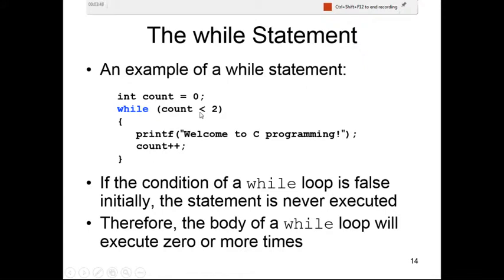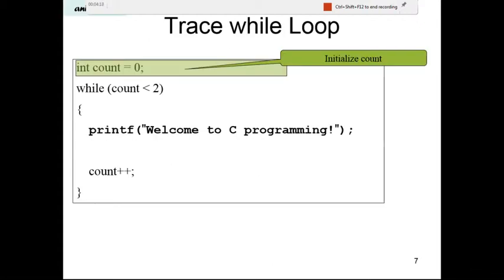In this example, count is less than 2 — that is the condition. If true, we execute the statement inside the curly brackets: printf("Welcome to C programming"), which is printed to the screen. Then we update count by incrementing it by one. The next slide shows the execution trace, starting with count equal to zero.